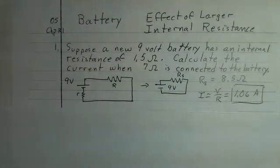We have a 9-volt battery, relatively new, not completely new, but its internal resistance, let's say, is 1.5 ohms. We're going to calculate the current when 7 ohms is connected to the battery.